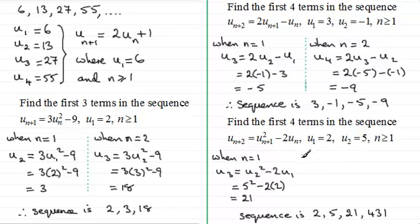And for the next term, we'll just section this off here. For the next term, we just set n equal to 2. So when n equals 2, we get U4. So U4 is equal to the previous term, which is U3 all squared, and then minus 2 times U2. And U3 was 21. So we've got 21 squared, which is 441, take away 10, which is 431.